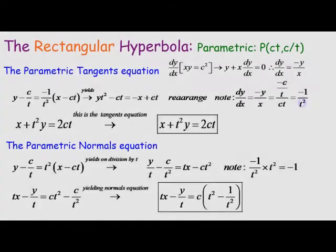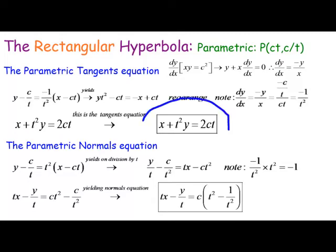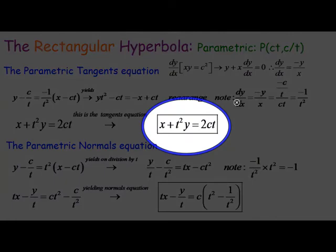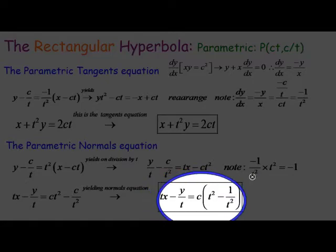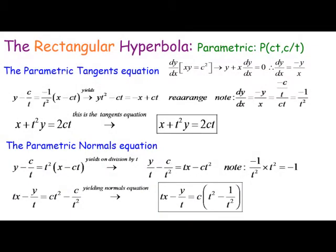The parametric gradient minus 1 over t squared is used to find the tangent, and the reciprocal for the normal. The parametric tangent equation is x plus t squared y equals 2ct, and the parametric normal equation is tx minus y over t equals c(t squared)(1 minus t squared).